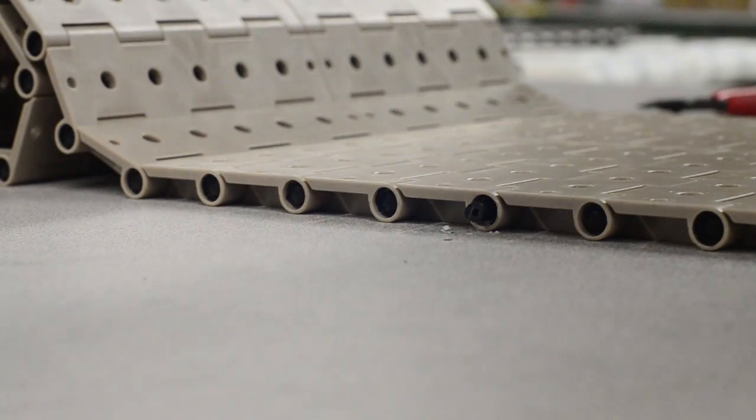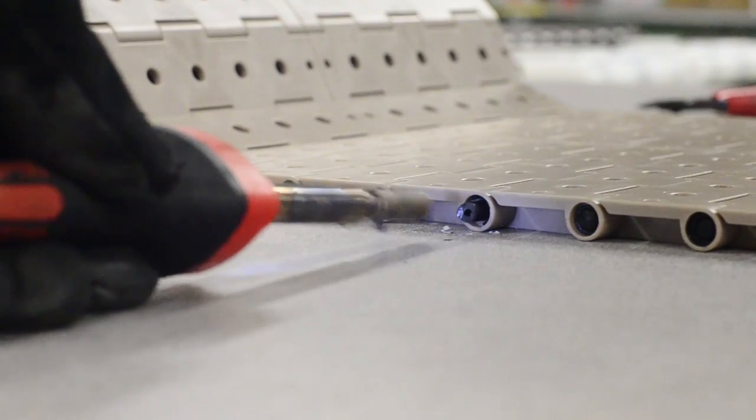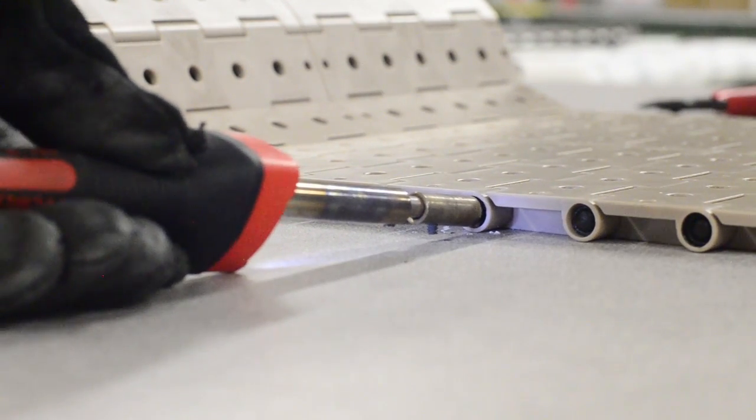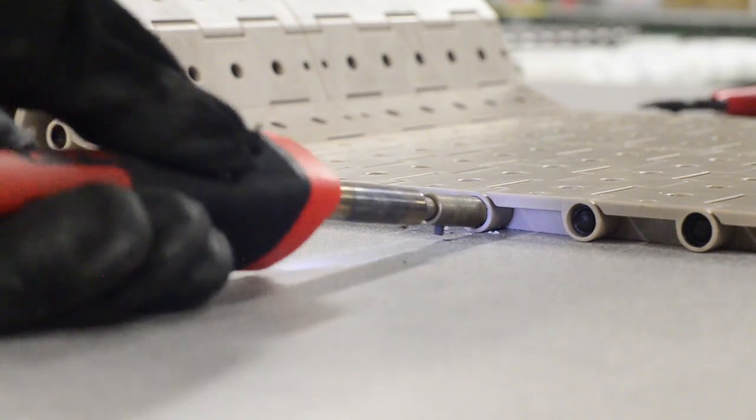Take the soldering iron and press it against the outer part of the pin, creating the soldered head. This is what will keep the pin within the chain during operation.